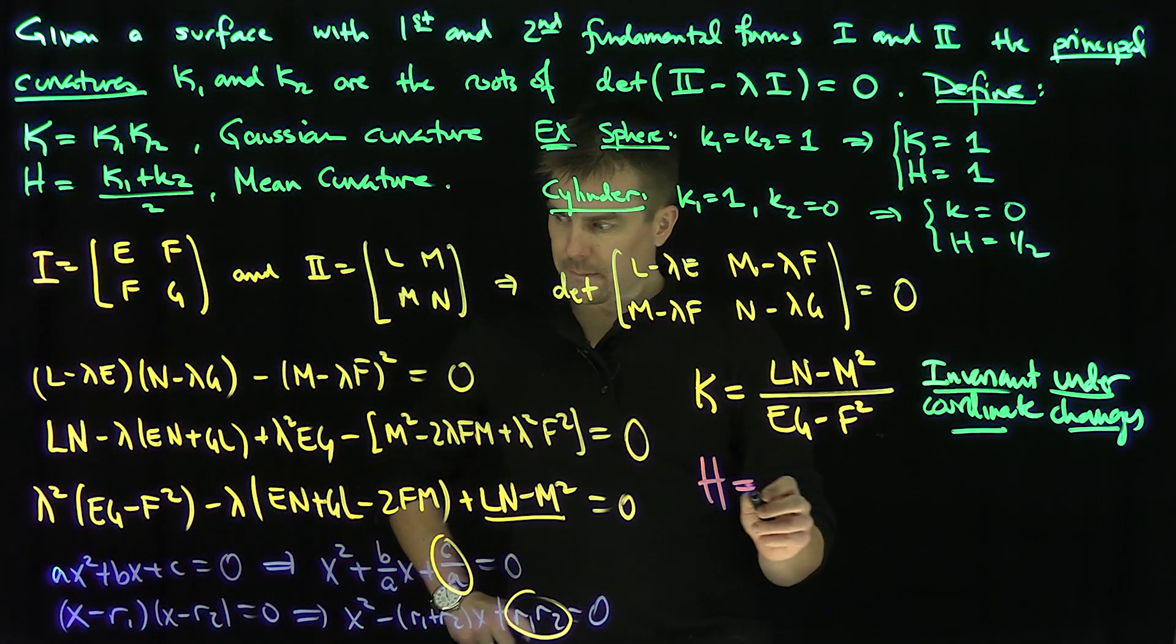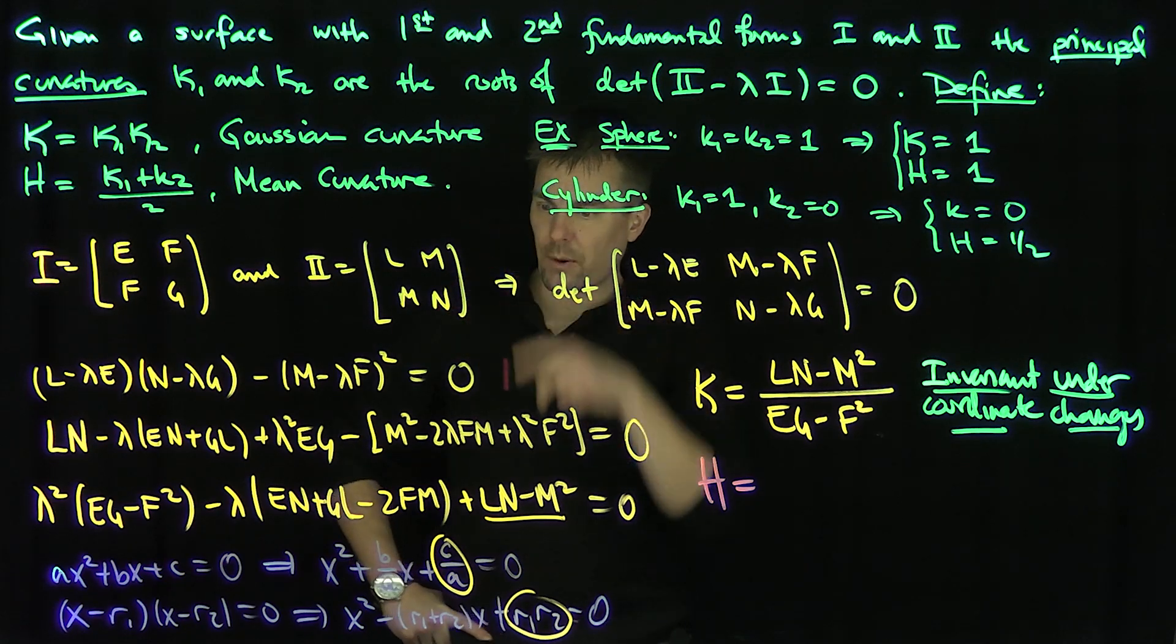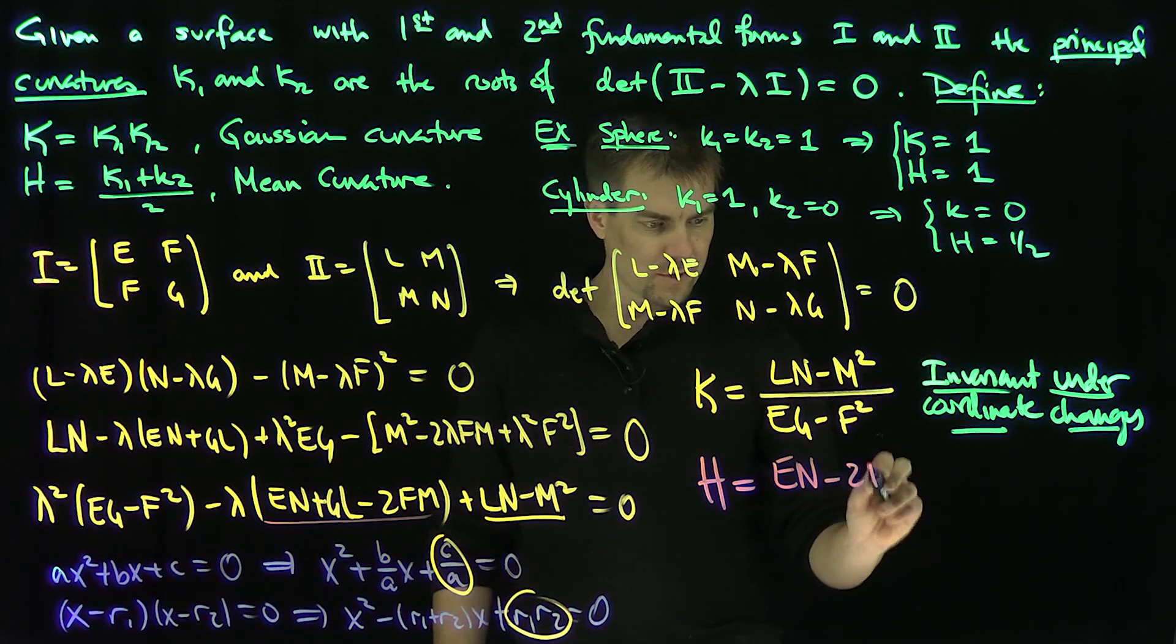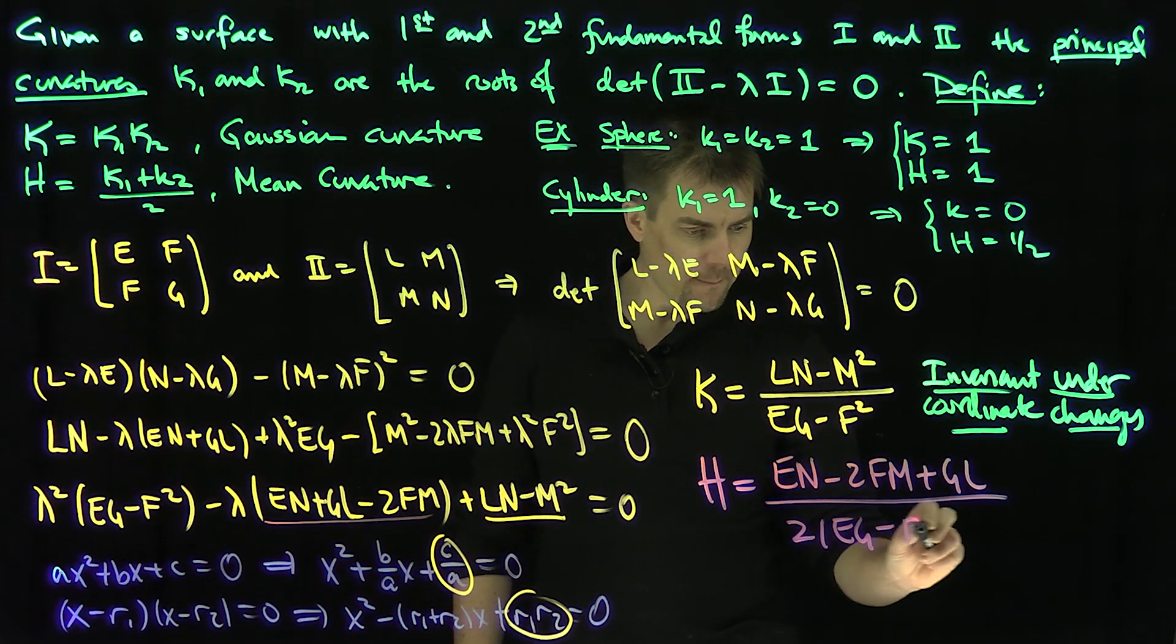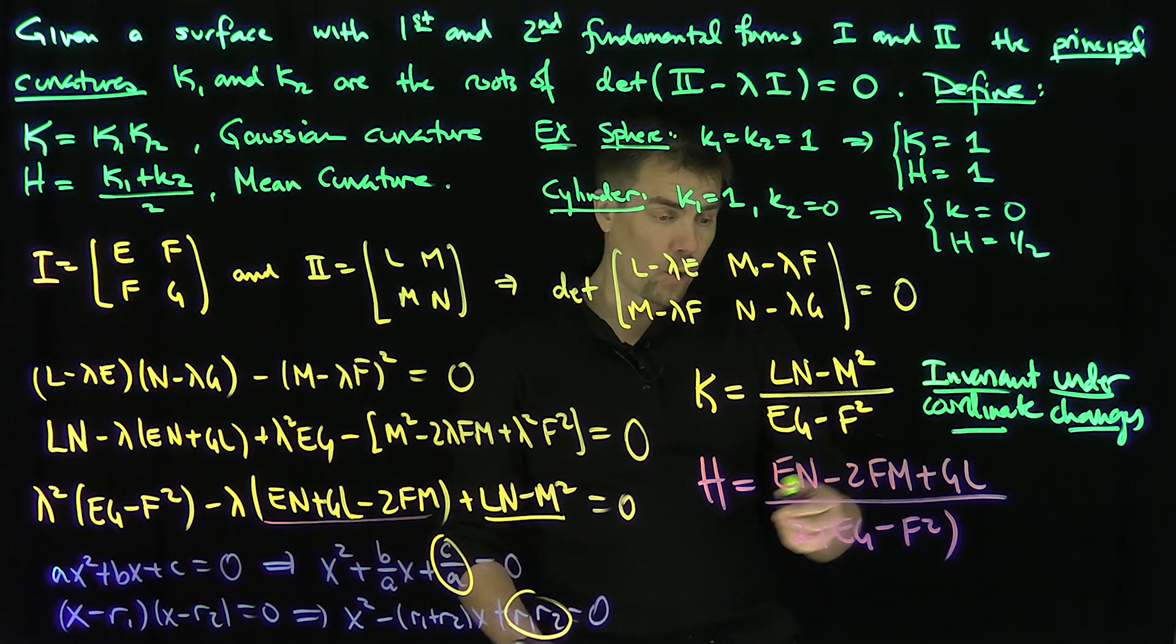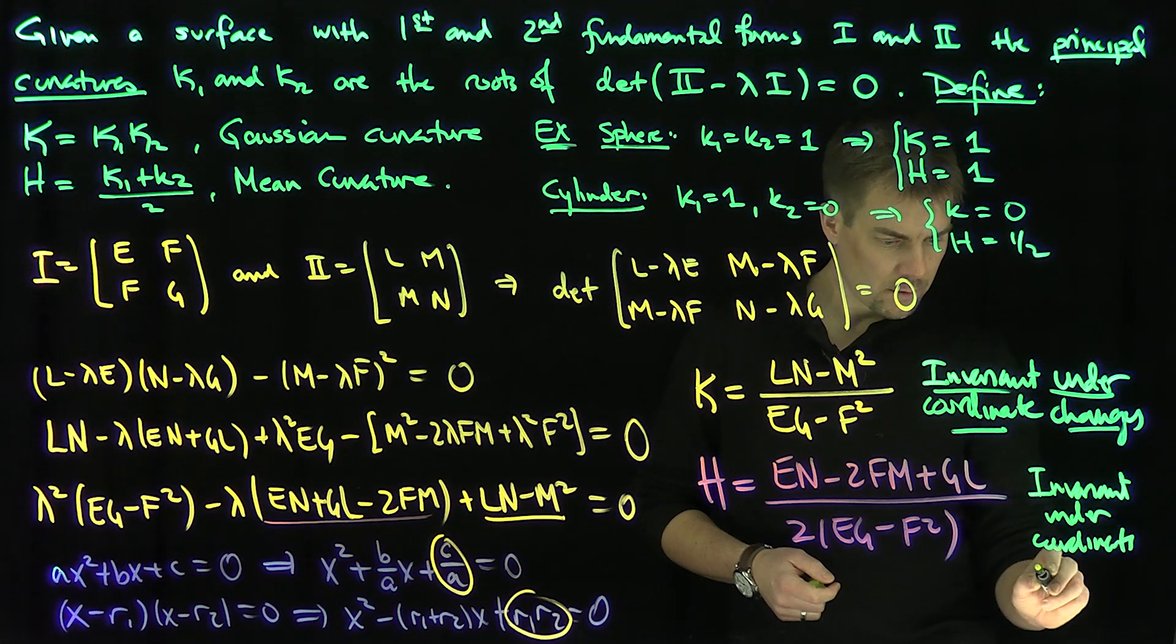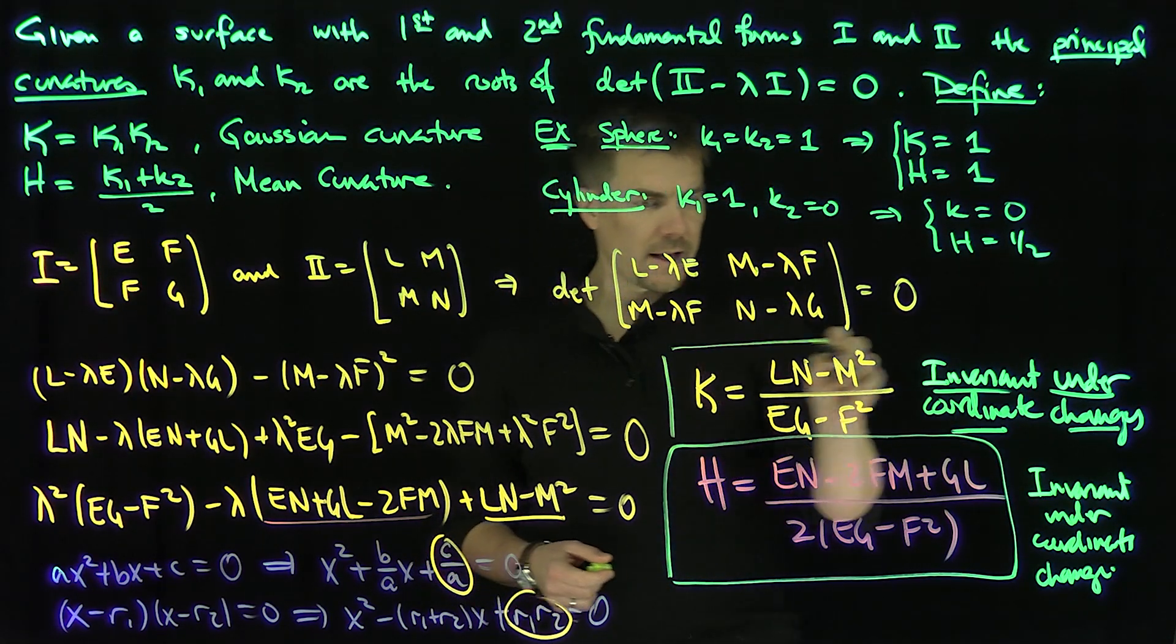So our curvature expression is going to be, now I have over two. So K1 plus K2, I need to do two in the denominator. K1 plus K2 is equal to this expression divided by this. So it's going to be E N plus, we'll just put that in the middle for symmetry sake, minus 2 F M and then plus G L relative to twice E G minus F squared. And again, we haven't proven that this quantity performs in the same way, but it's an elementary exercise to see that it's a quadratic form basically. It's a perfectly symmetric quadratic form. So this is also invariant under coordinate change.